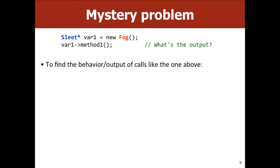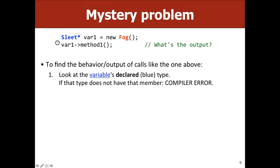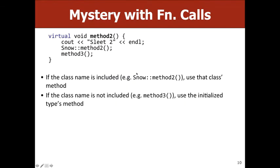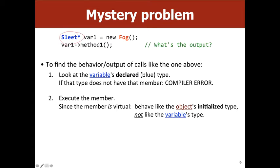Let's talk about how to solve these inheritance problems. If you're given something like a line of code with a declared type and an initialized type, you have to figure out the output. Start by looking at the declared type — the blue type on the left side of the equal sign — and see if that variable has a member of that type. For example, does sleet have a method 1? If yes, there's no compiler error. Then go look at the initialized type on the right side and use that class's method.